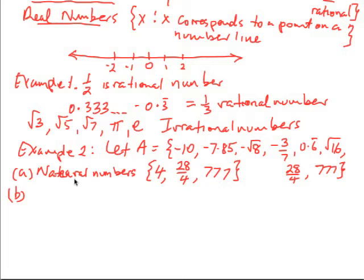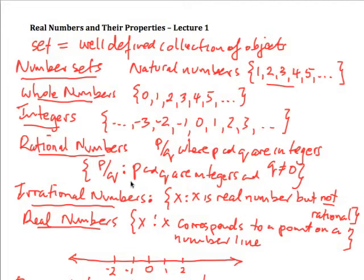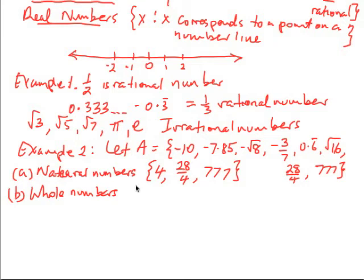Now let's look for the whole numbers. Whole numbers include the same as the natural numbers, except that it also includes zero. We don't have zero in this particular set, so the whole numbers here are going to be exactly the same as the natural numbers: 4, 7, and 777.